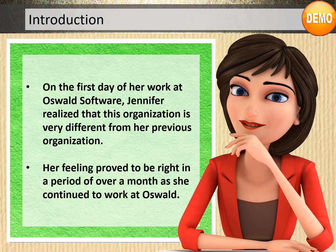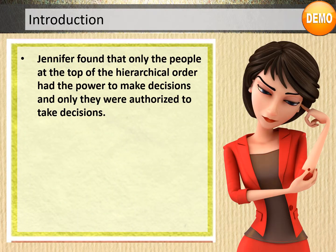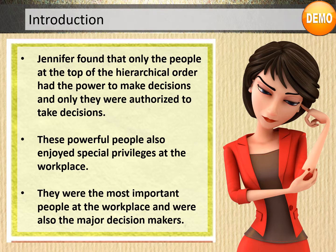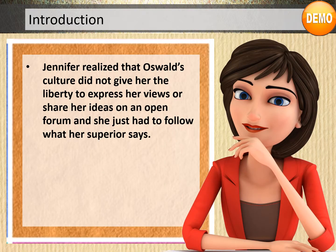As she continued to work at Oswald, Jennifer found that only the people at the top of the hierarchical order had the power to make decisions and only they were authorized to take decisions. These powerful people also enjoyed special privileges at the workplace. They were the most important people and were also the major decision-makers. Jennifer realized that Oswald's culture did not give her the liberty to express her views or share her ideas on an open forum.